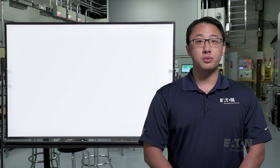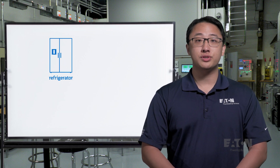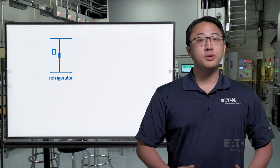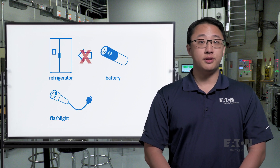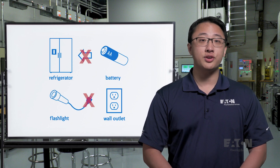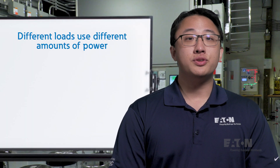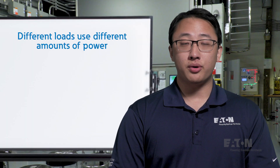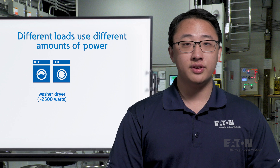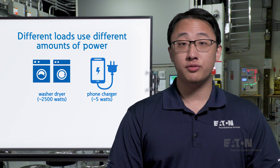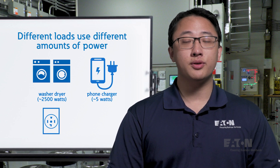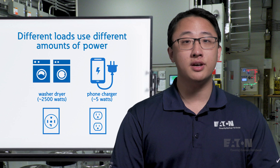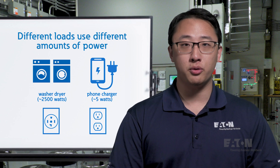First, certain loads require certain sources. You know you wouldn't power your refrigerator with batteries, and going the other way, you wouldn't power a flashlight with a wall outlet. Second, different loads use different amounts of power. A washer-dryer set uses significantly more power than your phone charger. In fact, if you check the plugs, they're actually different because they have different power requirements.